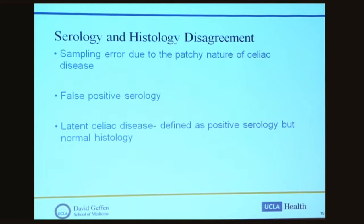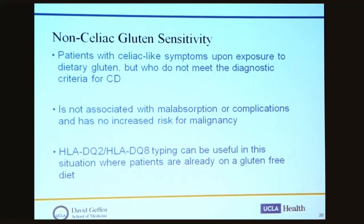There is growing interest in non-celiac gluten sensitivity. Many of us have experienced patients convinced they have celiac disease who have already gone on a gluten-free diet or are certain of the diagnosis after researching their symptoms online. Non-celiac gluten sensitivity is defined as celiac-like symptoms upon exposure to dietary gluten, but not meeting the diagnostic criteria for celiac disease. It is not associated with malabsorption or complications, and there is no increased risk of malignancy. Genetic testing may be useful in these cases since patients are often already on a gluten-free diet. This topic remains controversial — we don't entirely understand if gluten is truly the trigger for their symptoms, or what proportion may go on to develop celiac disease.